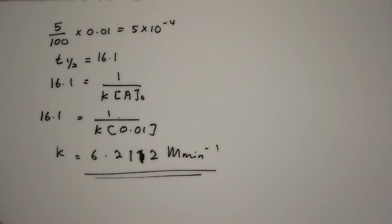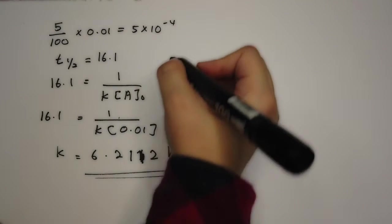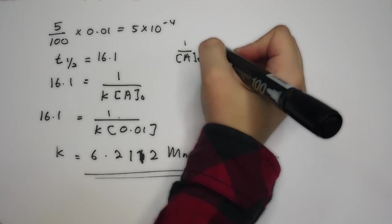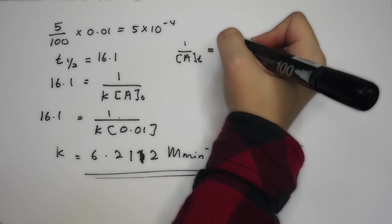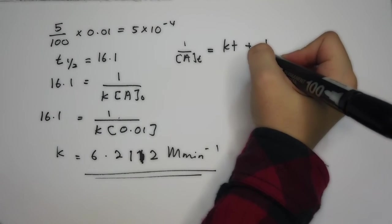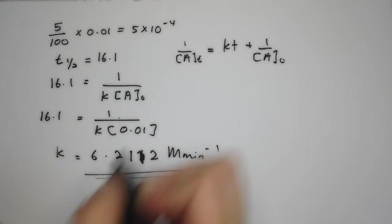And then you're going to use the second order reaction formula, which is 1 over A-T is equivalent to K times T plus 1 over A-naught.